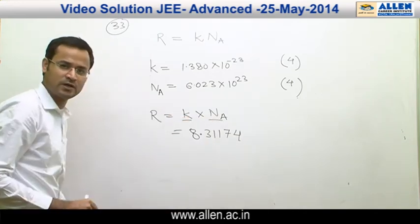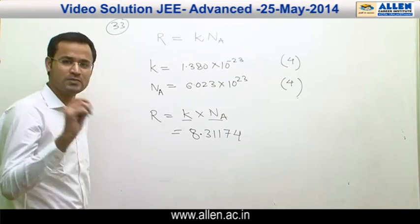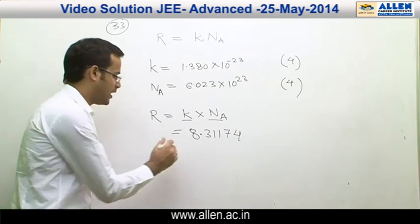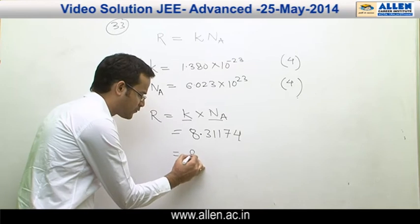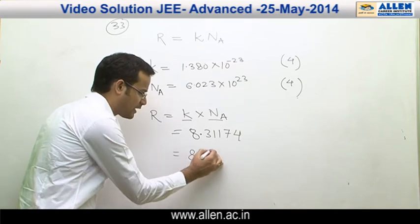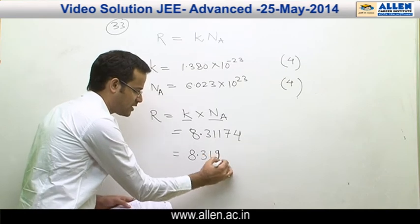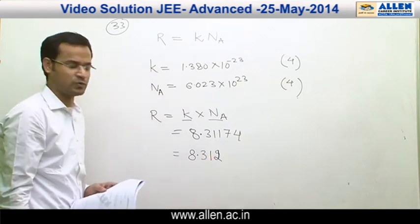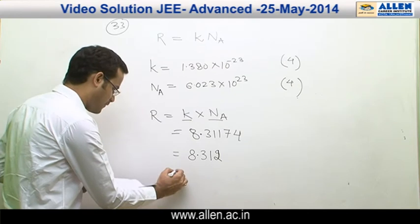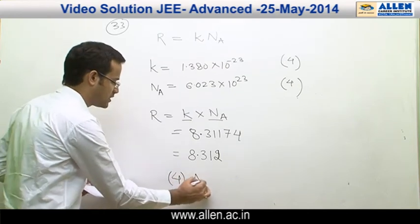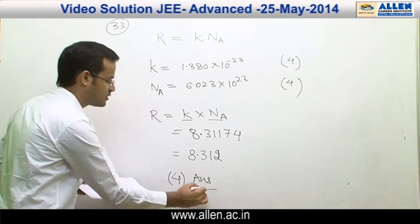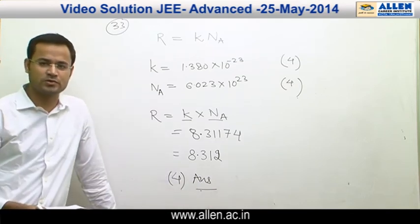Therefore, the number of significant figures in R must be 4, and for that we have to neglect the remaining two terms. So answer will be 8.312. Answer is 4, meaning there are 4 significant figures in the universal gas constant.